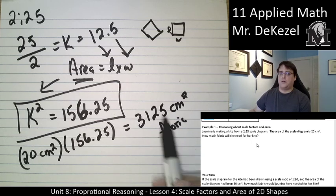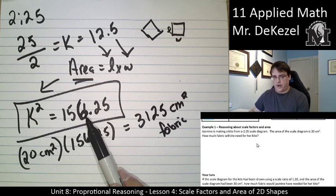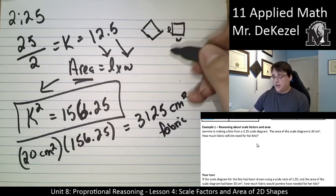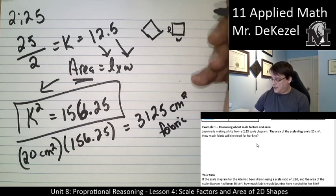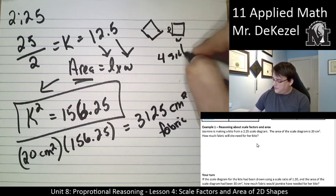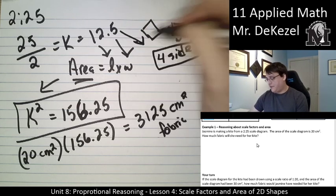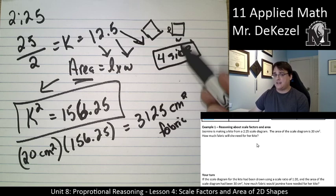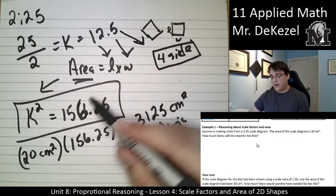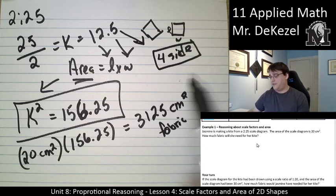It is very important that whenever we're scaling up an area unit, we're using the area scale factor or k squared. If I was scaling up the sides, if the sides was like 4 for a side, then I would be able to use the 12.5 scale factor to find out how much larger that side is. But when we're talking about area, we're having the length and the width or two sides. Therefore, we are going to have to use k squared.